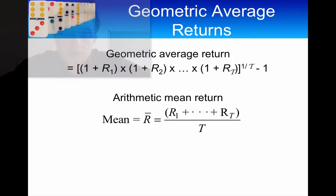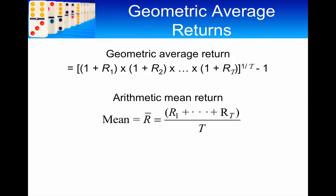So, let's look at the formula for both of these returns. Starting off with the geometric average return, you see that what we do is we take the return from any one period and we add one to it. Then we multiply the one plus return for each of the periods for T periods. And then we take the Tth root of that product and then we subtract one.